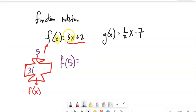3 times whatever the input is plus 2. And we do that calculation. 3 times 5 is 15 plus 2. It puts out 17. So f of 5 is 17. Right?